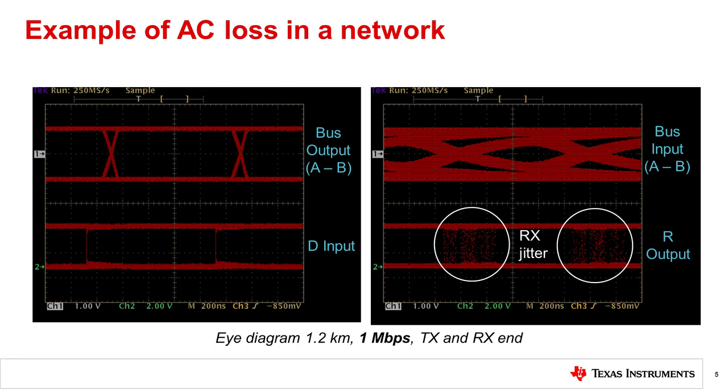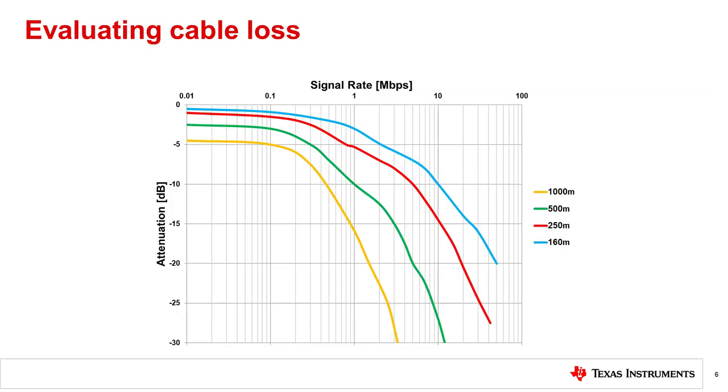When evaluating a particular link, the most critical factor is generally the insertion loss of the transmission line. This needs to be known across the frequency range of the data being sent. But how much insertion loss is too much? This depends on how much jitter the receiving system can tolerate.